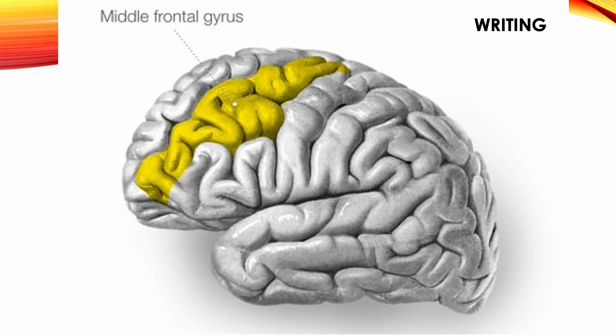Writing is located at the posterior part of the middle frontal gyrus of the frontal lobe. If injured, the patient's hand muscles are normal, but the patient is unable to write and perform refined movements, thus losing the ability to write.